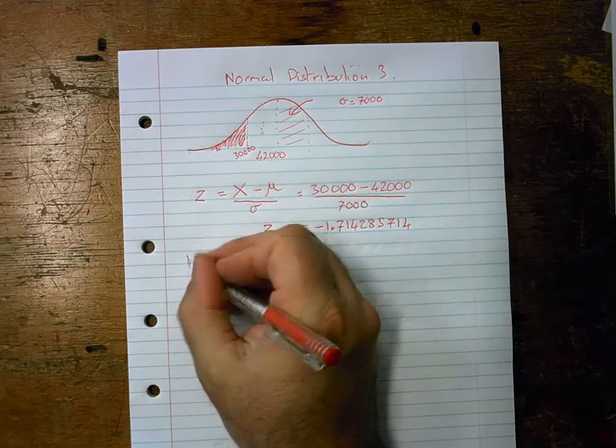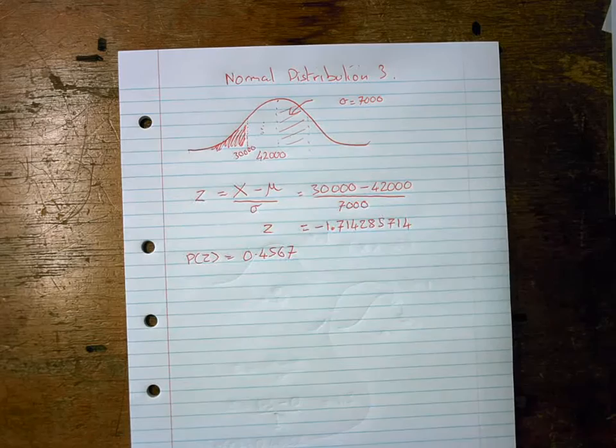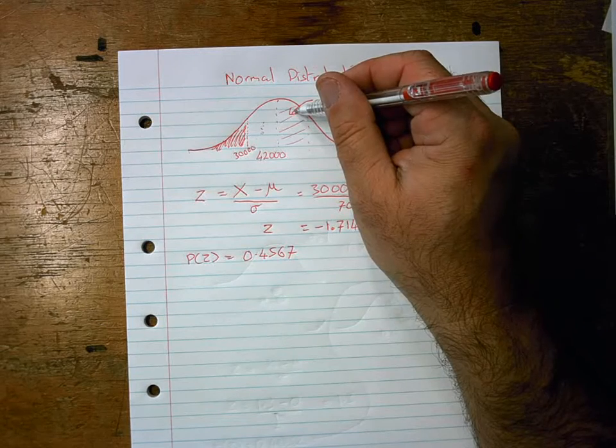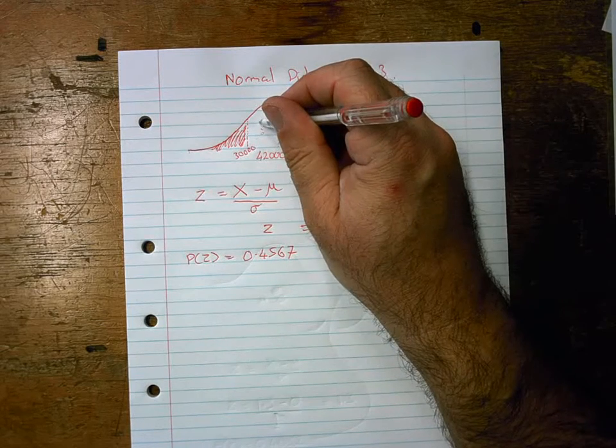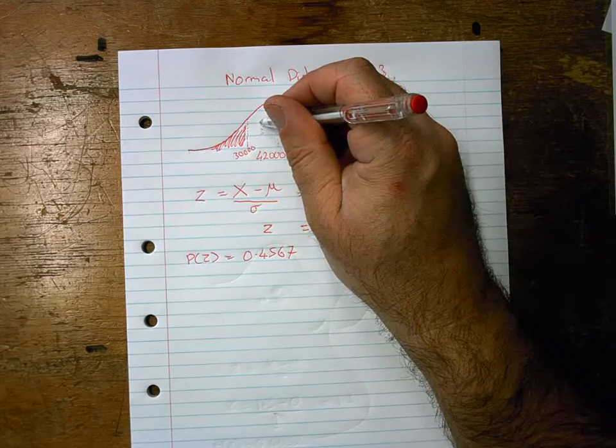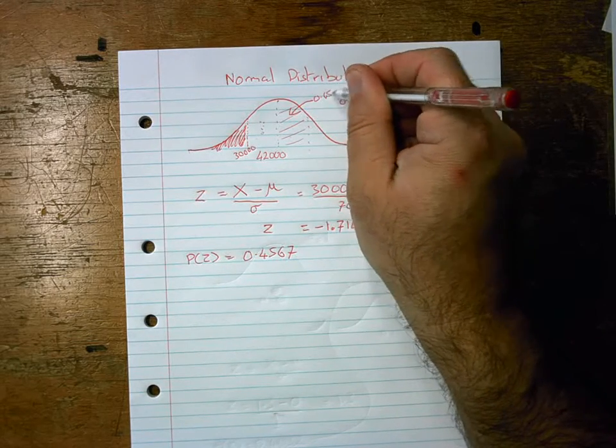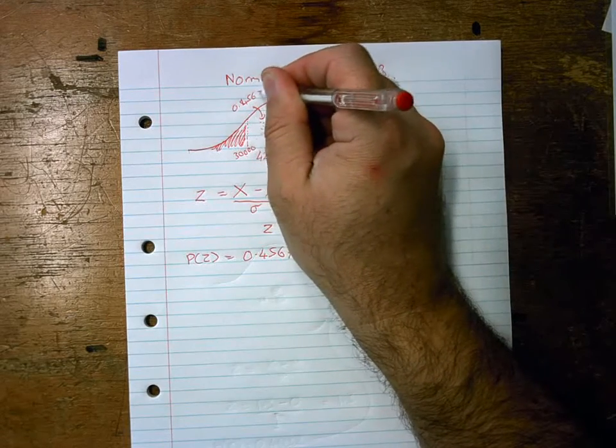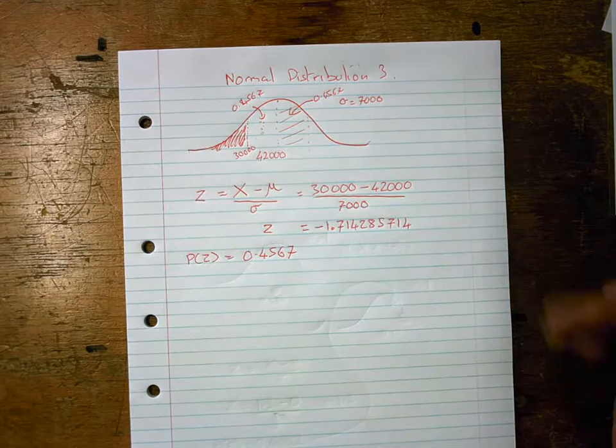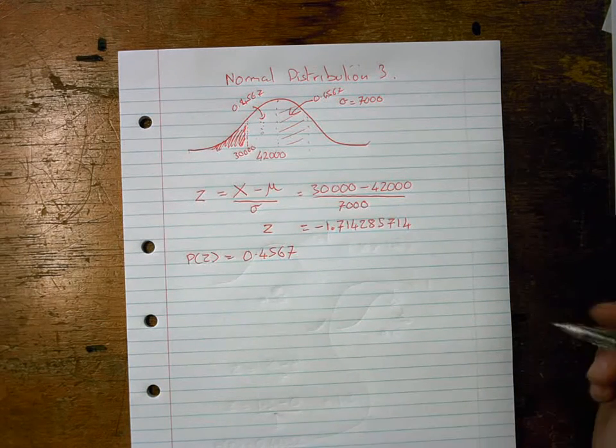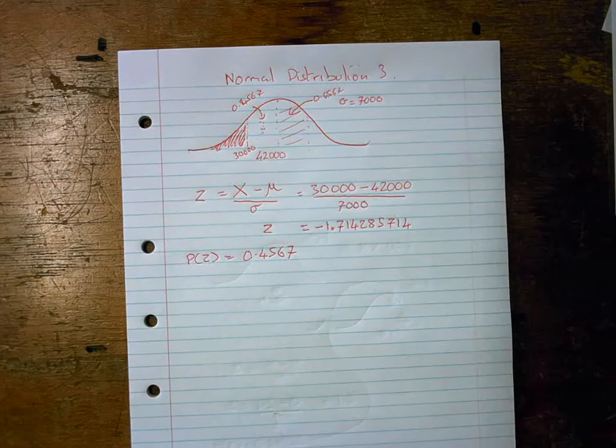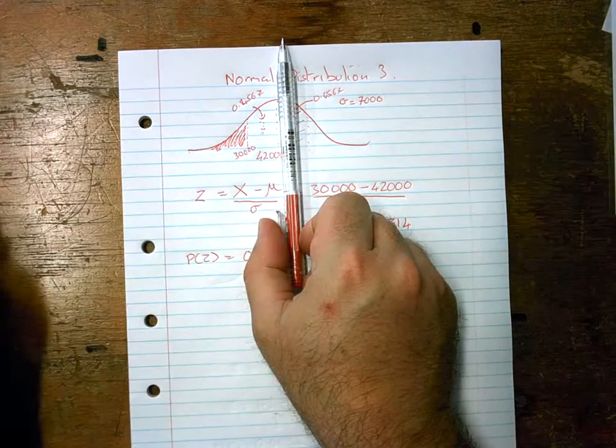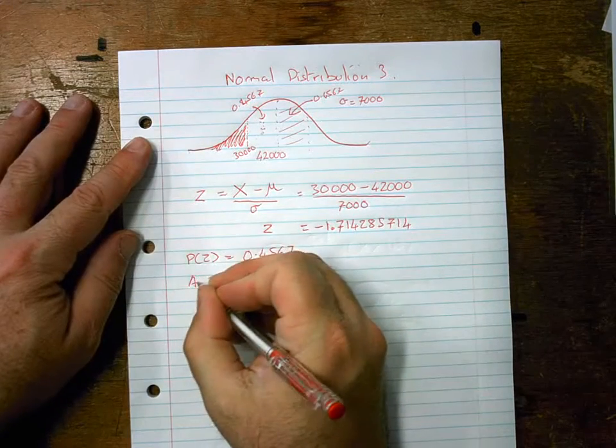So that equals 0.4567, and I've looked that up. So the probability of getting that z number is that. Now remember, that was for that bit, so this bit's definitely 0.4567, which means that this bit is also 0.4567. So we know that this bit is 0.4567. Can you see how much less complicated this all became because we drew the picture? Because you can label the picture up really easy. Now, if I know that that's that, how big is that? Well, that's half of it, so that's 0.5.